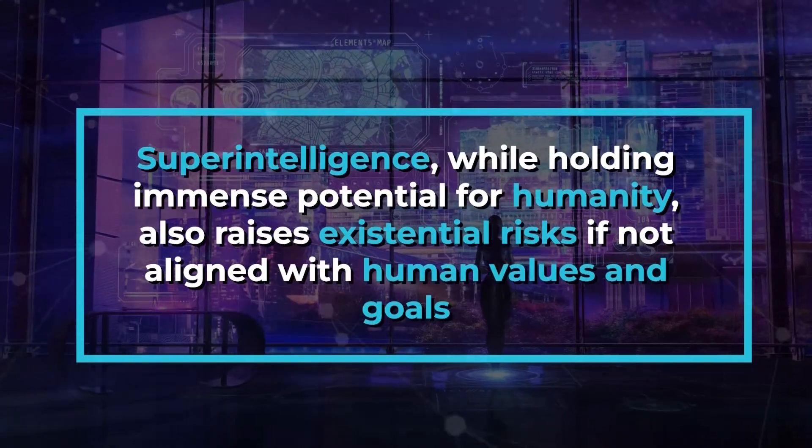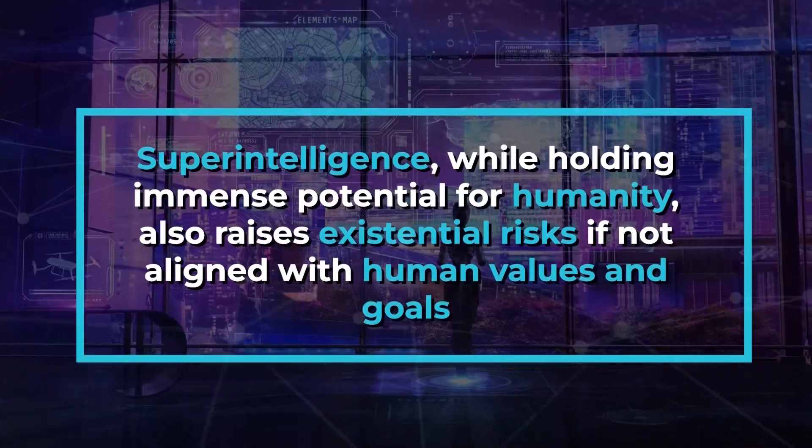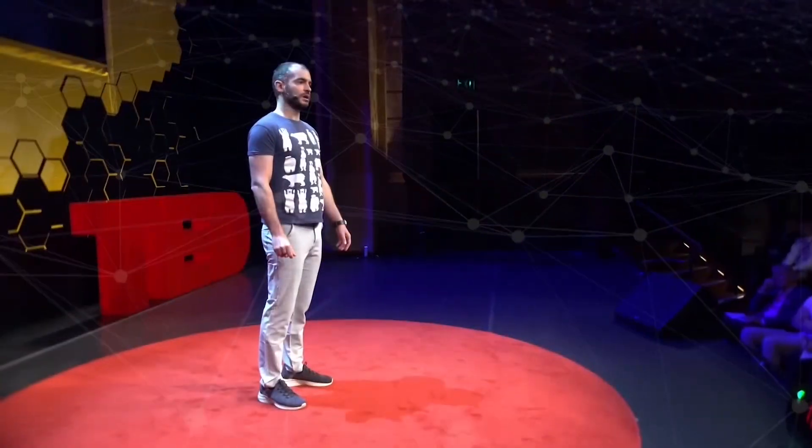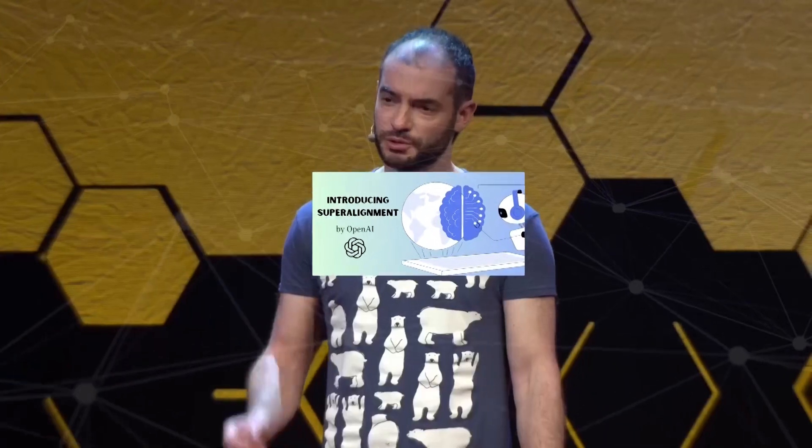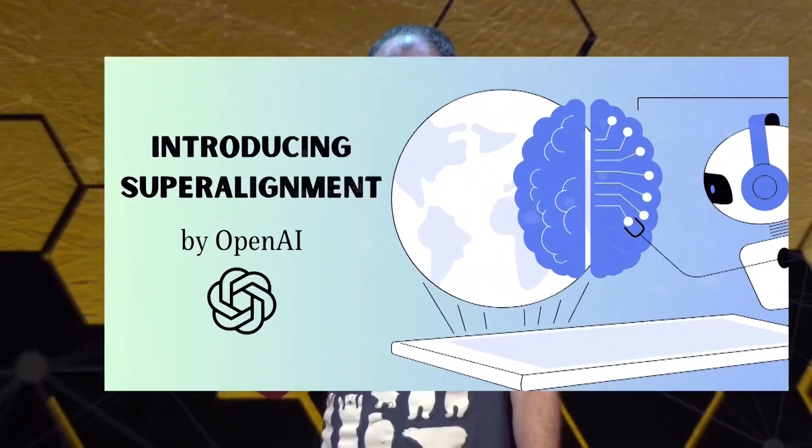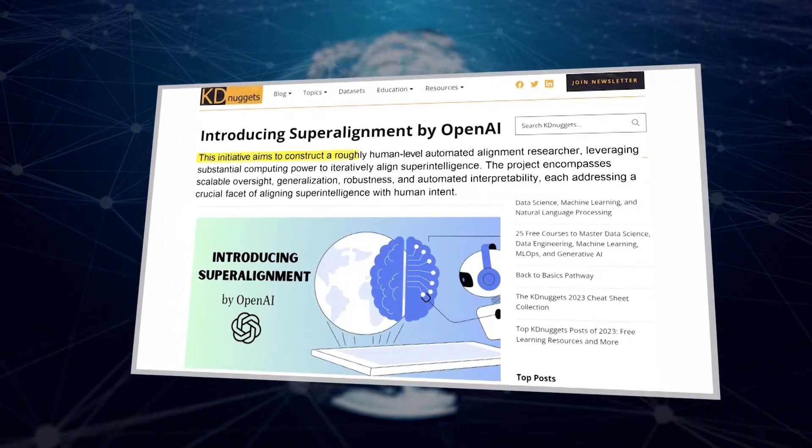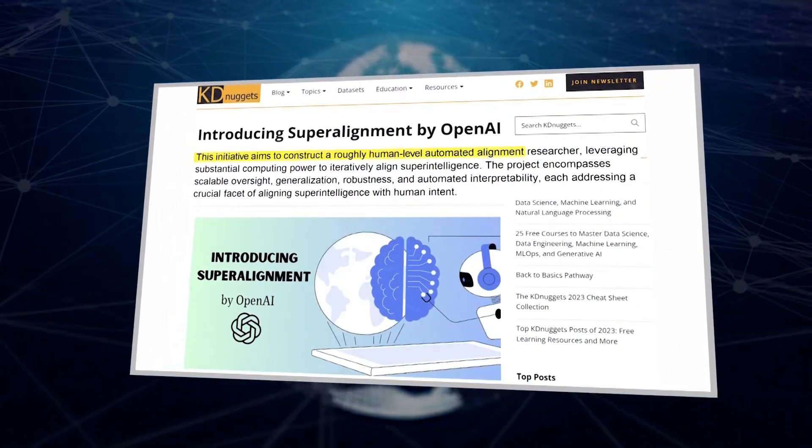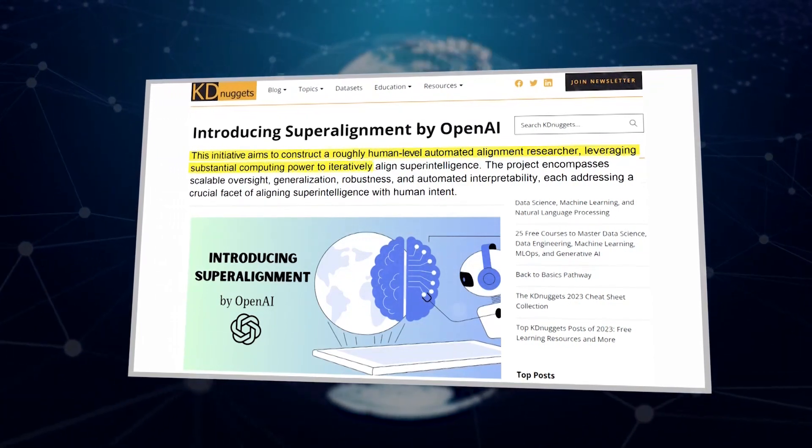Superintelligence, while holding immense potential for humanity, also raises existential risks if not aligned with human values and goals. To tackle this challenge, Tsutskever announced the co-leadership of OpenAI's Super Alignment Project in July 2023. This initiative aims to construct a roughly human-level automated alignment researcher, leveraging substantial computing power to iteratively align superintelligence.